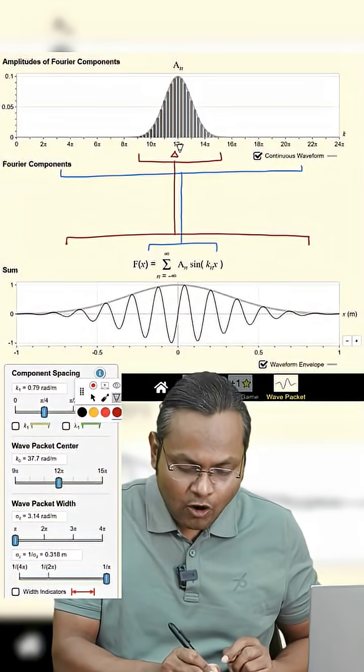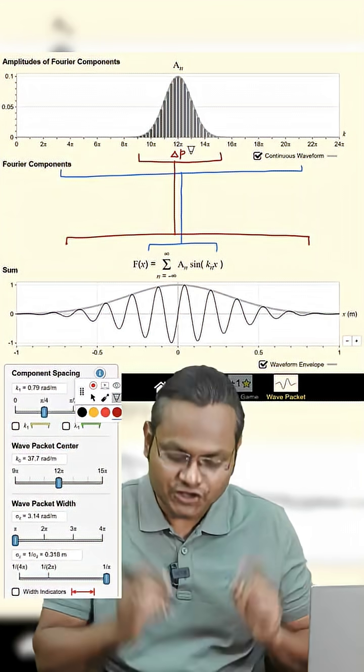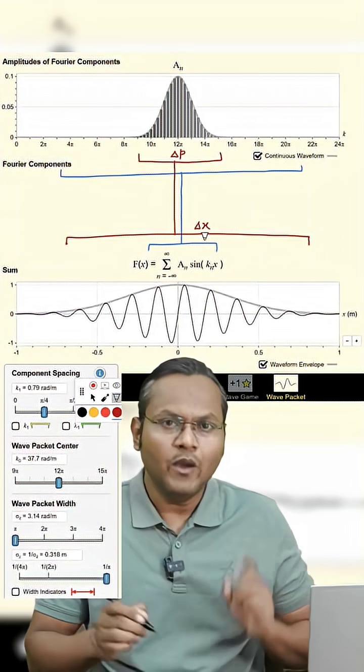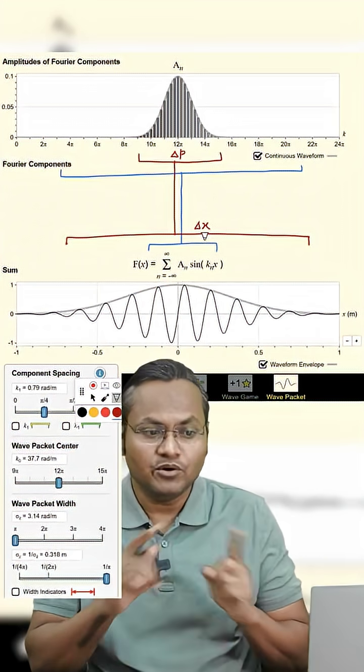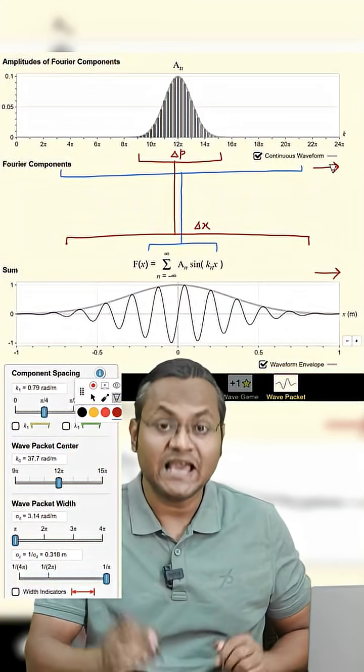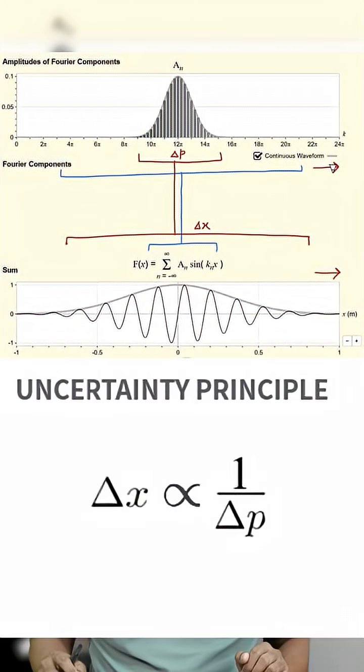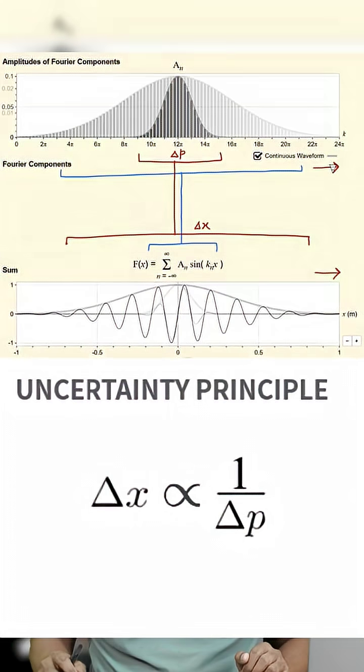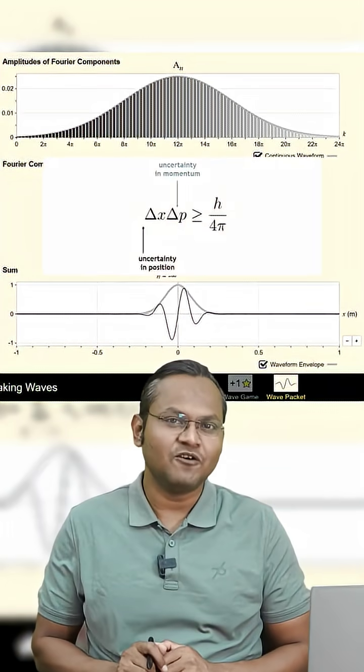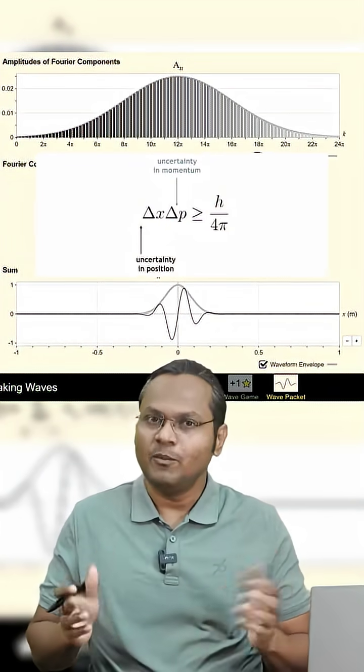That means the spread of momentum is inversely proportional to the spread of position. A wave packet which is localized in position space is spread out in momentum space and vice versa. That means uncertainty in position and momentum are inversely proportional, which is simply a mathematical result of Fourier transform for the wave nature of a particle.